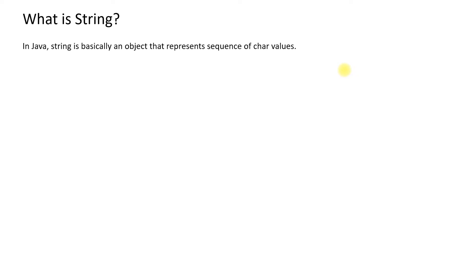So what is a string? A string is basically an object that represents a sequence of character values. For example, if I have a variable: string example = "this is a literal string" — everything inside the double quotes is a string.